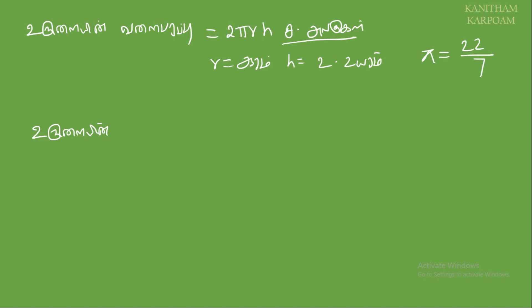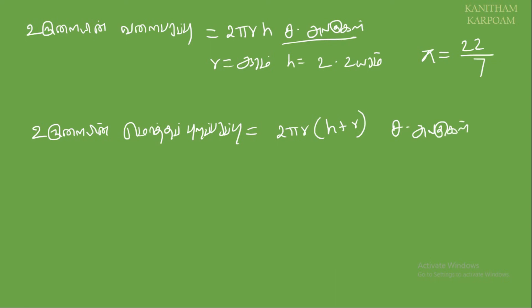So, if you get the number of 2πr, you will see the number of 2πrh plus r. So, if you get the number of 2πrh plus r, you will see the number of 2πrh.